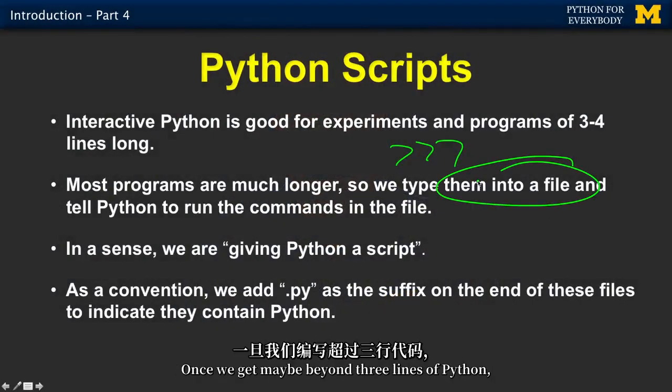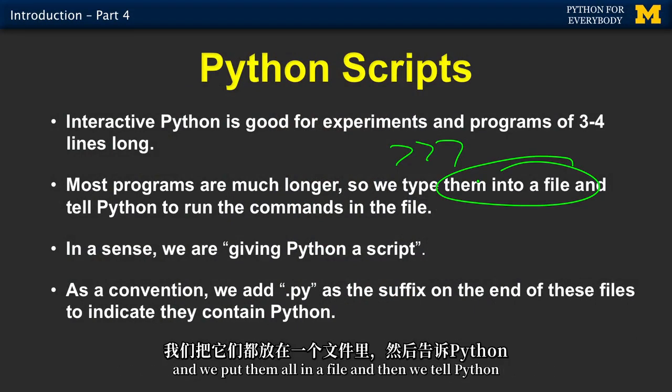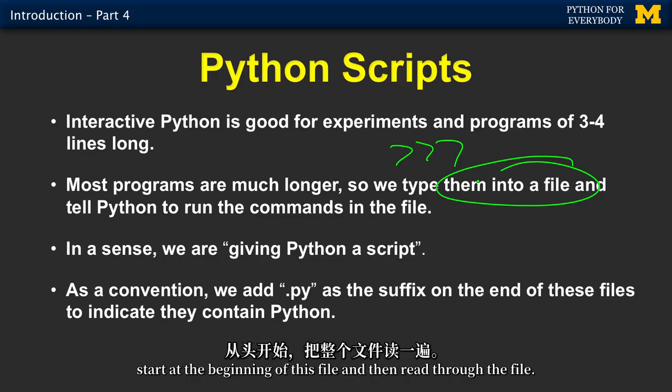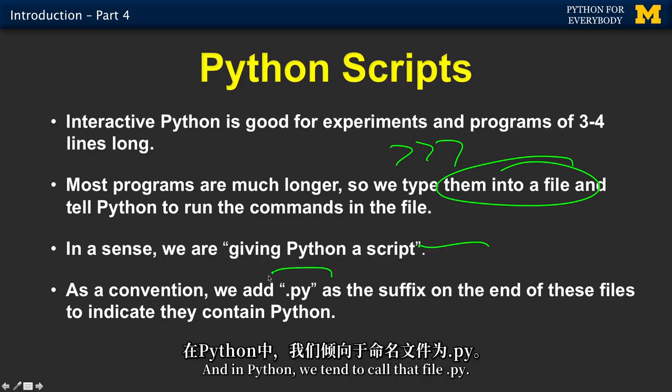It's much more common to type something in a file. Once we get maybe beyond three lines of Python, we tend to just use a programming text editor, like Atom, and we put them all in a file. Then we tell Python, start at the beginning of this file and read through it. We call this a script or a Python program.